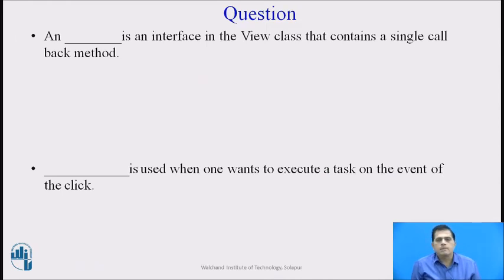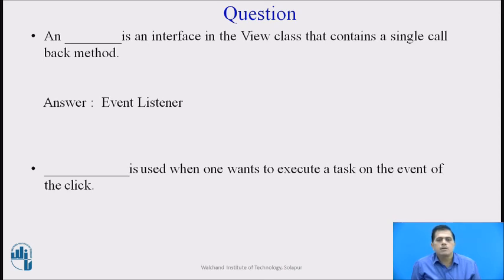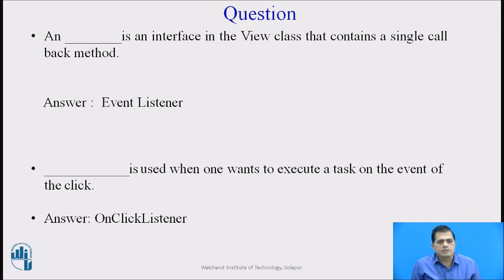Now, pause the video and answer the questions. Question one: a blank is an interface in the View class that contains a single callback method. The answer is EventListener — we have seen that an EventListener is an interface in the View class used with a single callback method. Question two: a blank is used when one wants to execute a task on the event of a click. The answer is OnClickListener — because OnClickListener is the interface in the View class used when one wants to execute a task on a click event, for example clicking a radio button, checkbox, or text box.